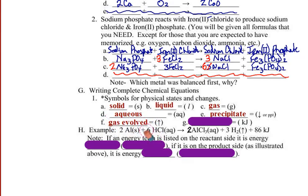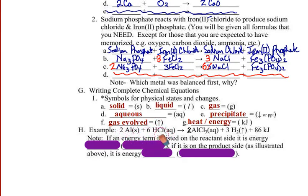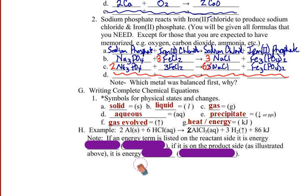An example using these symbols: two moles of aluminum solid with six moles of hydrochloric acid (aqueous solution) will yield two moles of aluminum chloride in aqueous solution, three moles of hydrogen gas, and 86 kilojoules released. Now, this 86 kilojoules is on the product side — it's as if it is produced in the reaction, which means this would be an exothermic situation.